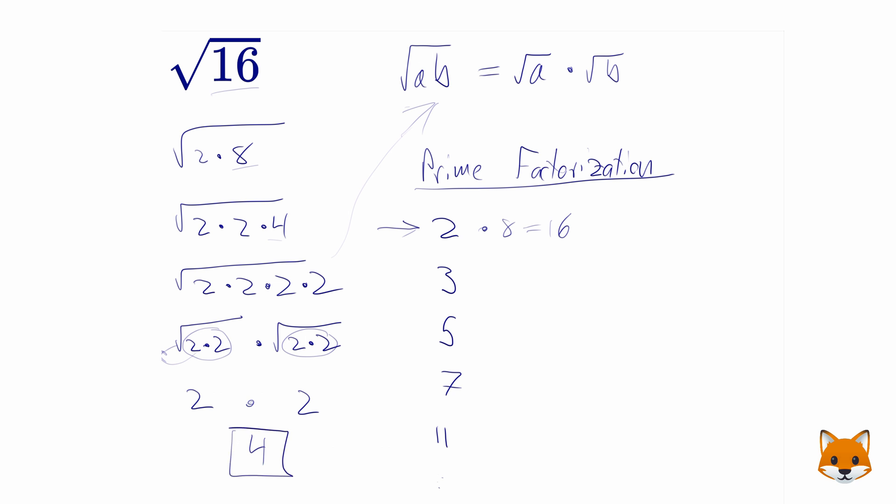So what that means is that 16 is a perfect square because 4 times 4 is equal to 16. The square root of 16 is 4.